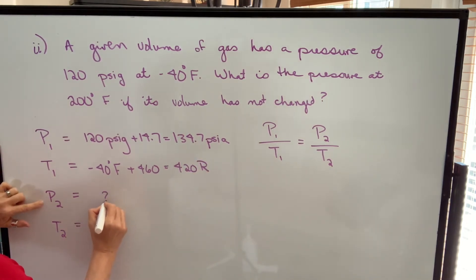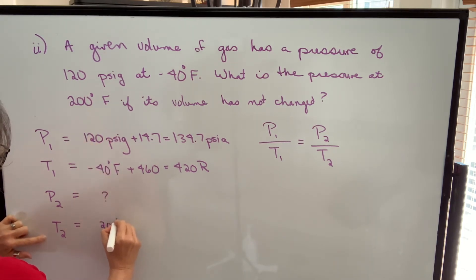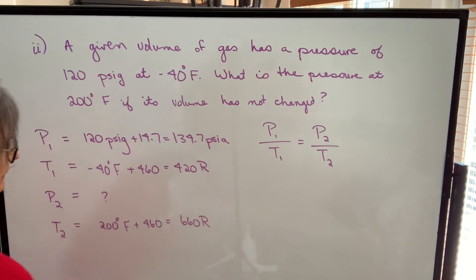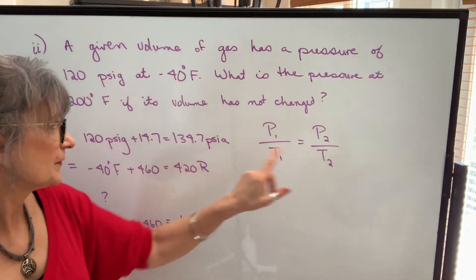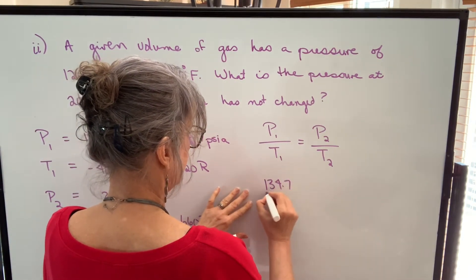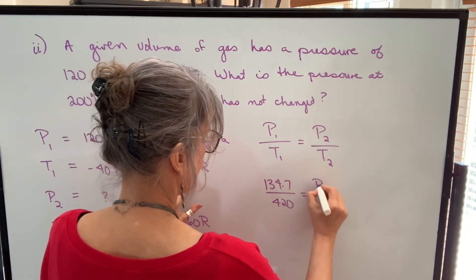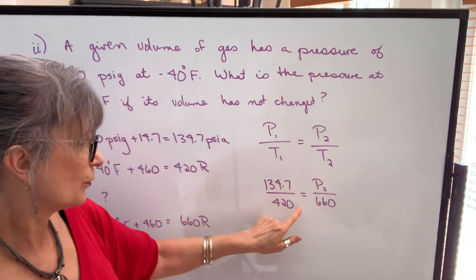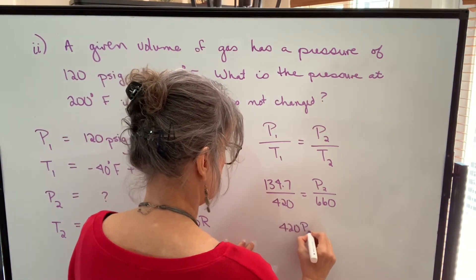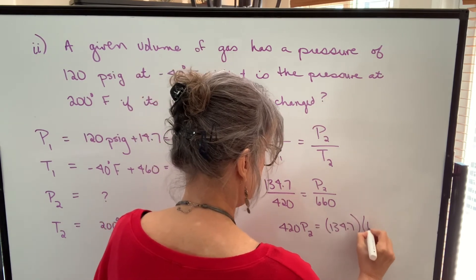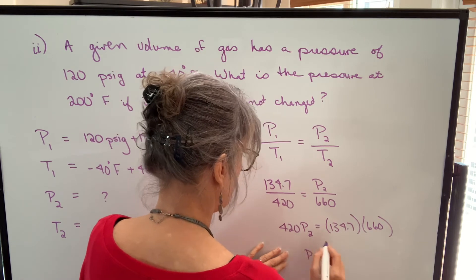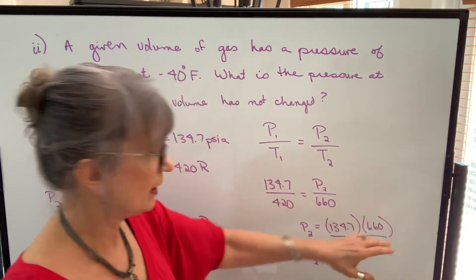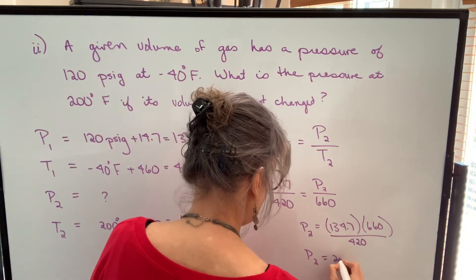Pressure two we don't know. Temperature two is 200 degrees Fahrenheit — add 460 to get an absolute temperature of 660 Rankine. Now plug into the formula: 134.7 over 420 equals P2 over 660. To solve, cross-multiply: 420 times P2 equals 134.7 times 660. Divide both sides by 420 to solve for P2, and we get 211.7.